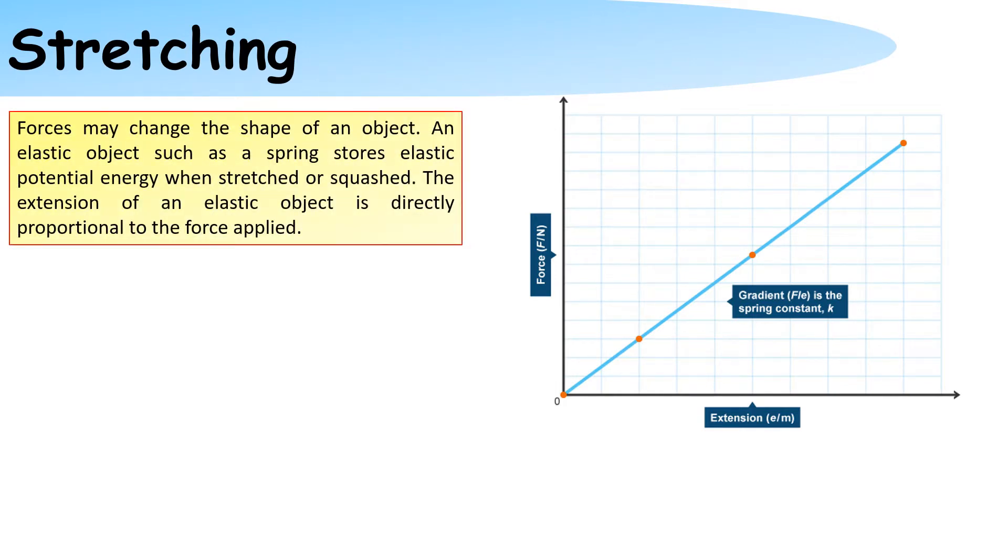Forces may change the shape of an object. An elastic object such as a spring stores elastic potential energy when stretched or squashed. The extension of an elastic object is directly proportional to the force applied to it.